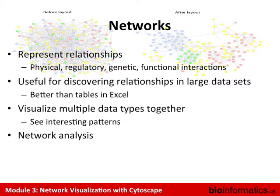The main idea is that networks represent relationships. If you have any kind of data that's rich in relationships, it's much easier to visualize and consider it as a network rather than as a table. Relationships can be represented as a table — A connects to B, B connects to C — but if you visualize it as a network, it's much more useful for discovering relationships in large datasets.